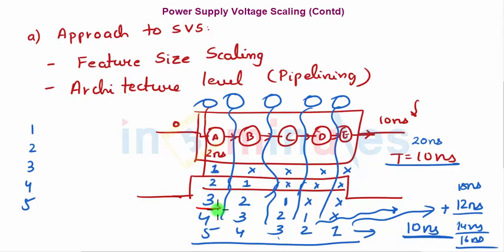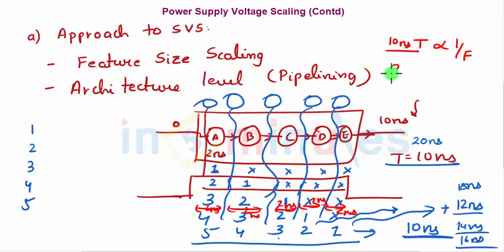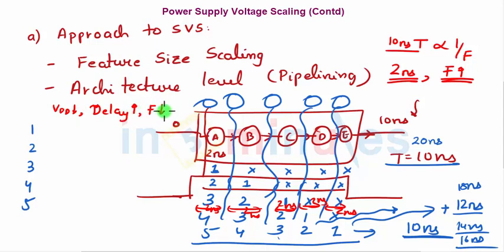This improved throughput is the performance gain. The clock given to the pipelined circuit would be only 2 nanoseconds because all stages operate in 2 nanoseconds. Since time period is inversely proportional to frequency, I reduced my time period from 10 nanoseconds to 2 nanoseconds, improving frequency considerably. Now, how is this related to static voltage scaling? When we scale down VDD, time delay increases and frequency decreases. With five pipeline stages, the frequency improved five times — from 1/10 to 1/2.